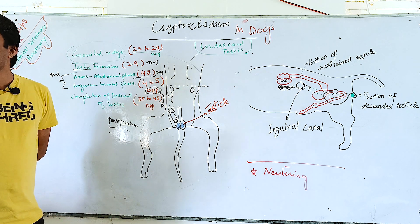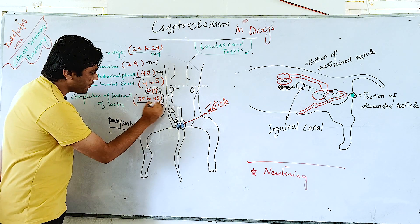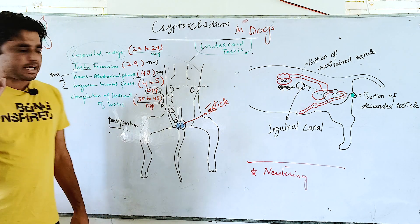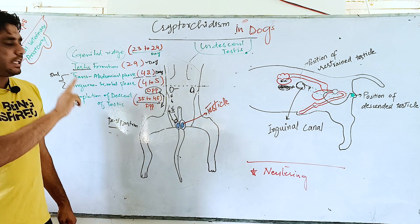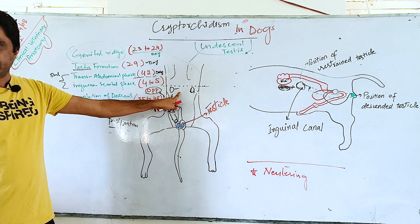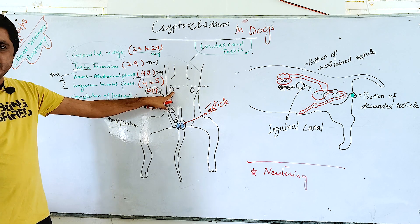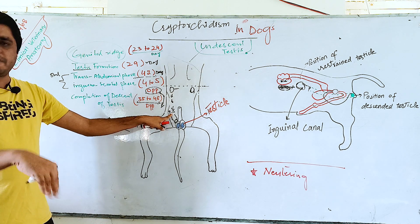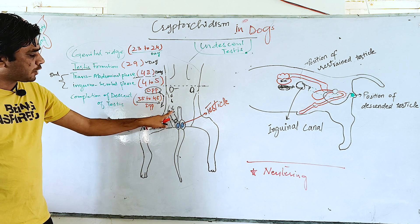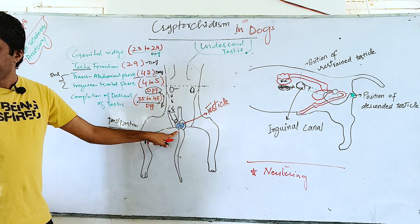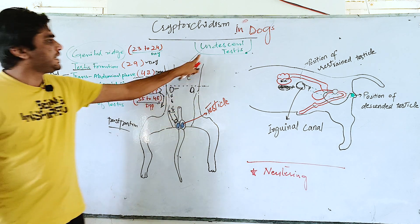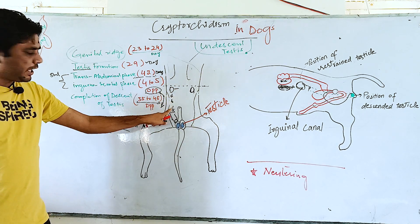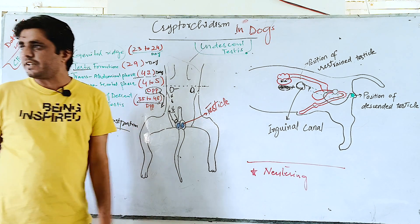The completion of the descent of testes in dogs may take two months after parturition, or specifically 35 to 45 days. So the normal pathway involves two phases: the transabdominal phase where testes develop and travel to the inguinal canal, and the inguinal-scrotal phase after parturition where they travel through the inguinal canal to the scrotum. That is the normal pathway from the site of development to the scrotum.